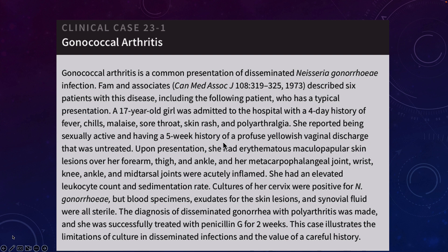This is why it's really important to try to get an accurate history. For those working in an OB-GYN setting or clinics where people present with sexually transmitted infections — especially when talking about juveniles — it's important to get an accurate history, which may involve some awkward conversations, like getting parents out of the room so the child feels comfortable to disclose what's really going on.